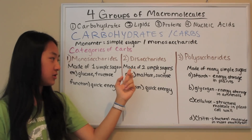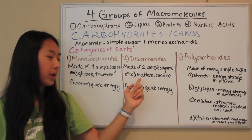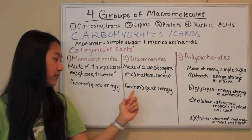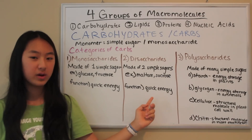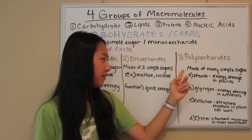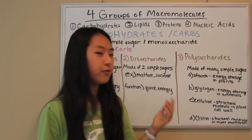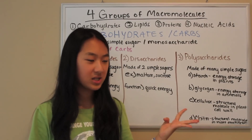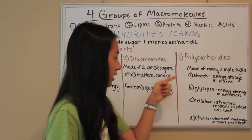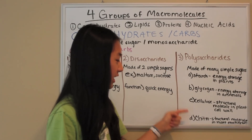Disaccharides are made of two simple sugars, for example maltose or sucrose, and their function is also quick energy. Polysaccharides are made of many simple sugars, and there are four kinds of polysaccharides: starch, glycogen, cellulose, and chitin.